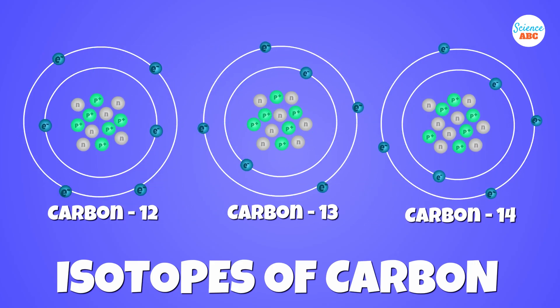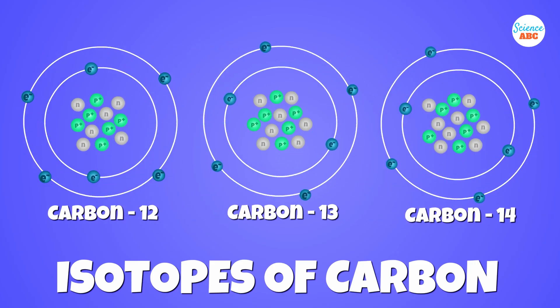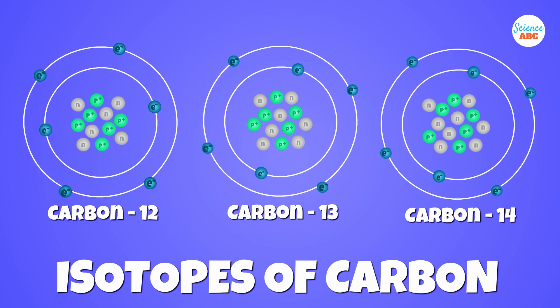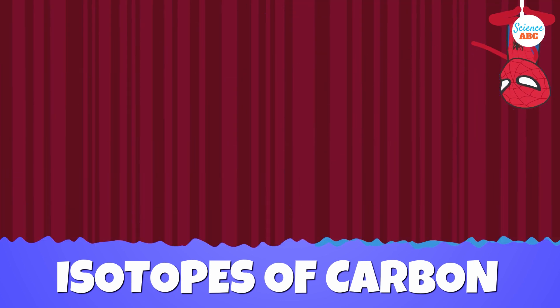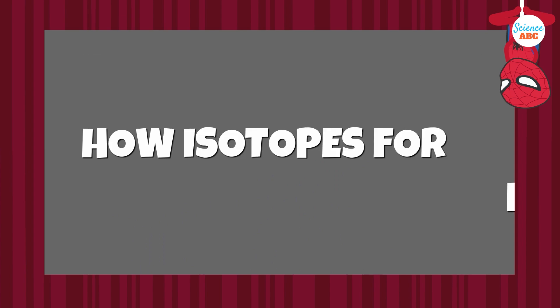Isotopes are different forms of the same element that have the same number of protons but different numbers of neutrons. We've already created a short five-minute video that explains isotopes — you can find it linked in the description.